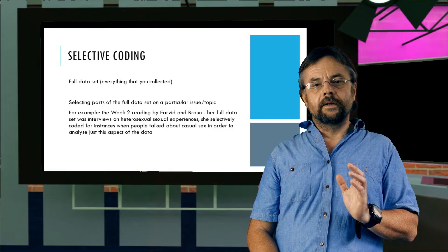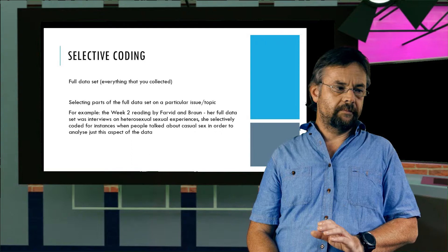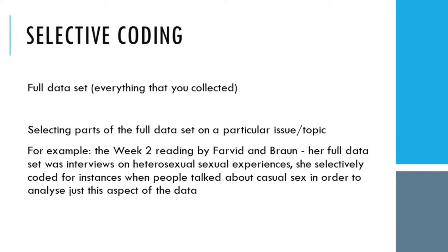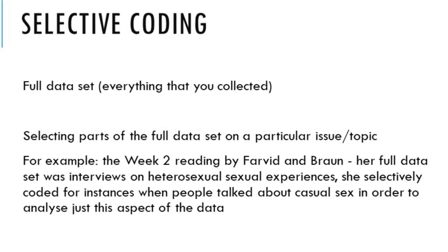So in our reading for week two, the paper by Farvard and Braun was selective coding. The project was much bigger. It was more broadly on heterosexual sexual experiences. The authors used selective coding as the basis of their paper, which was on the topic of casual sex in particular, just one part of the data that they collected.